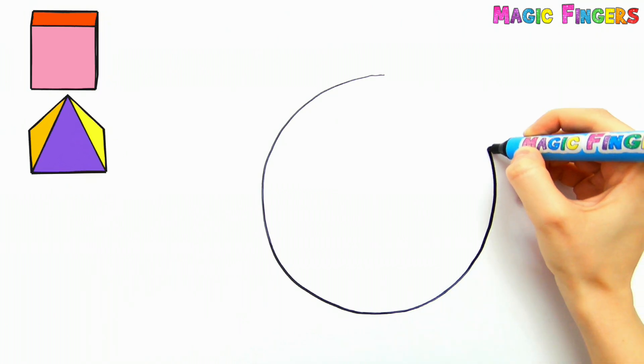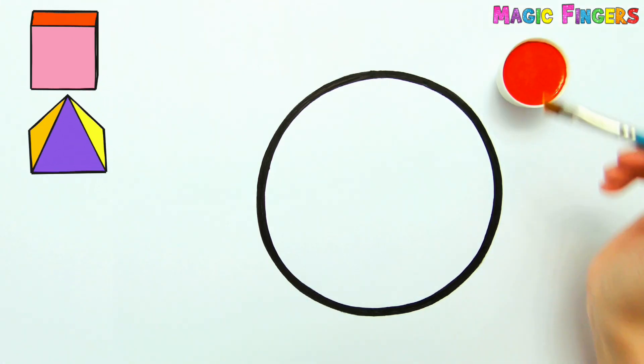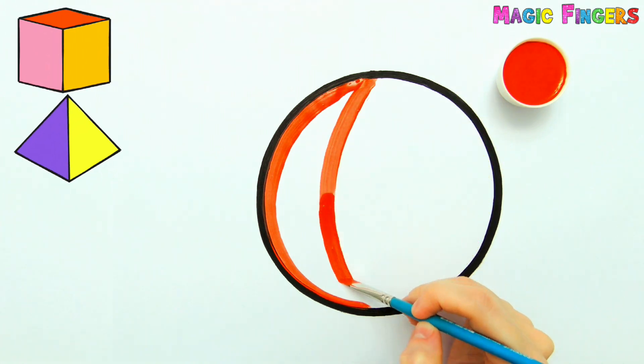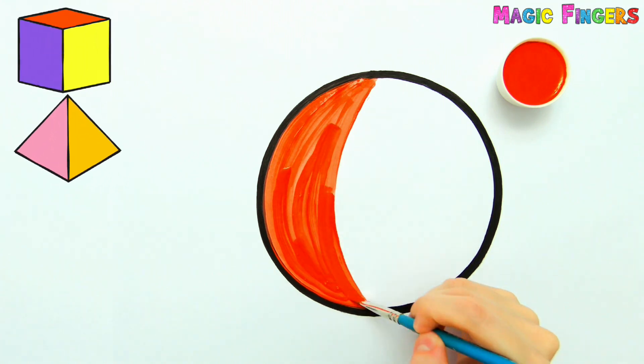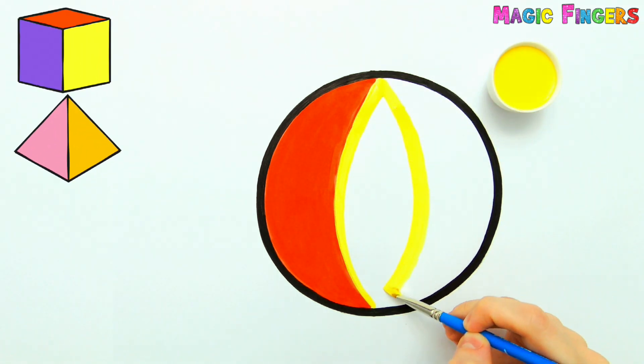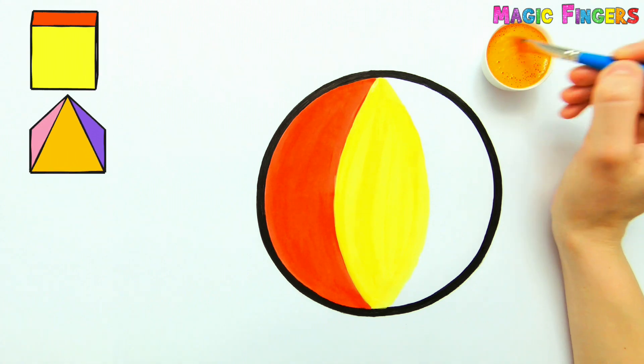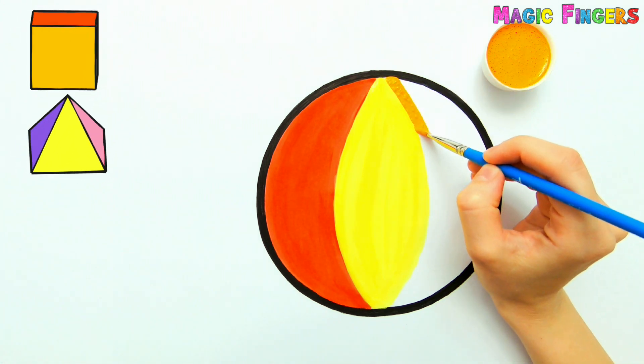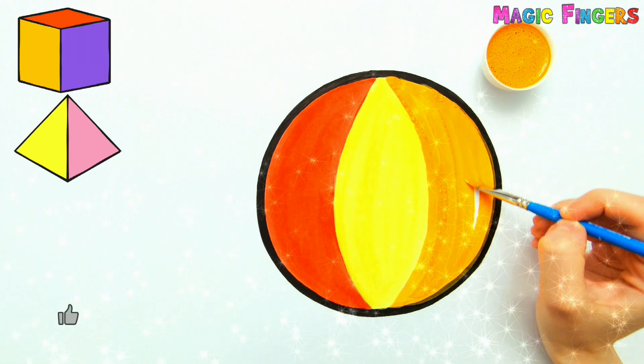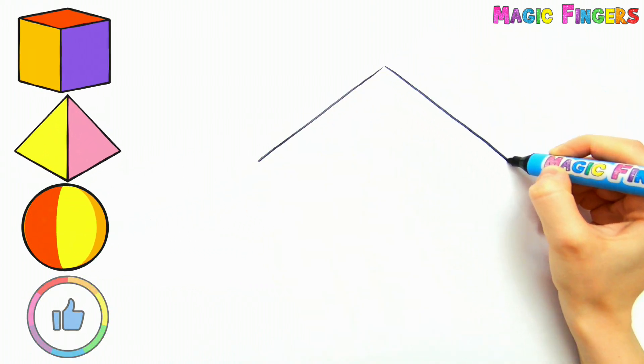And I'm drawing a circle. Red. Yellow. Orange. Magic fingers! Ta-da! The circle turned into a sphere.